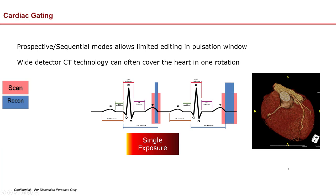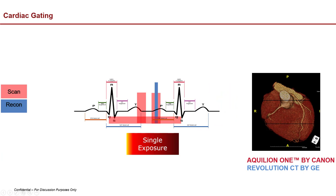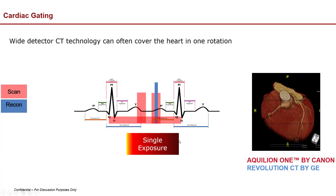You can image the heart in one rotation and see it entirely. Generally speaking, the wide detector gives you better images when you have heart rate variability and when heart rates are really low. On some of the newer scanners, you can actually adjust the exposure to increase when there's not going to be motion and decrease outside of that, and still capture the entire cardiac cycle.